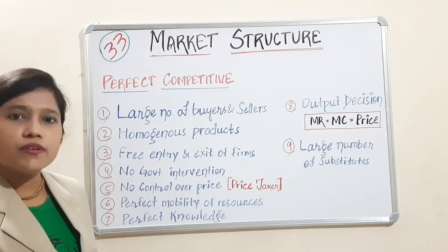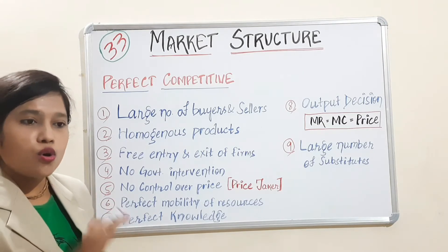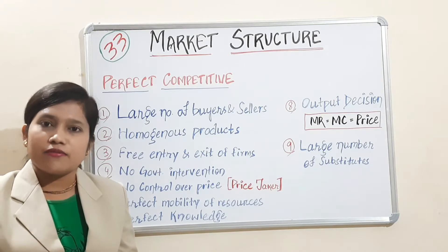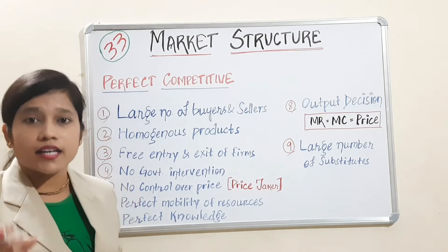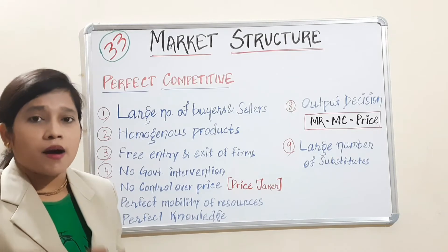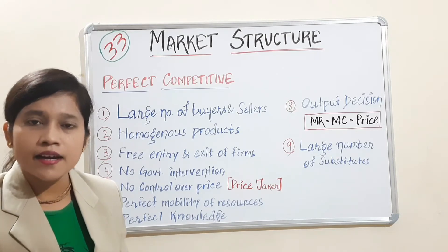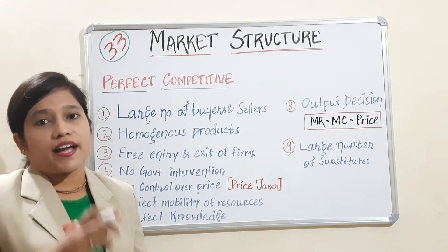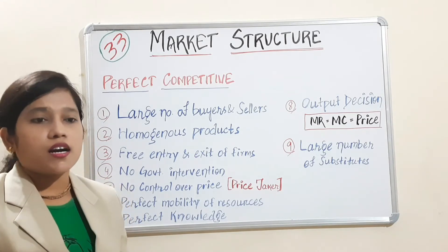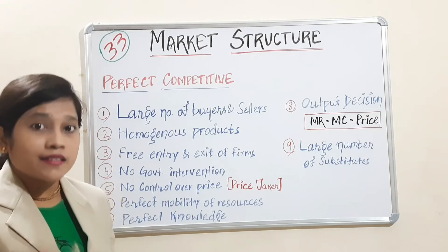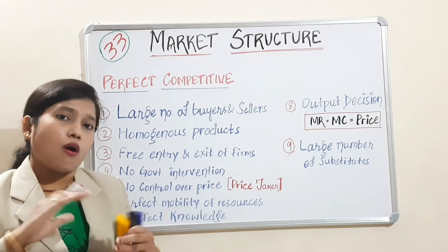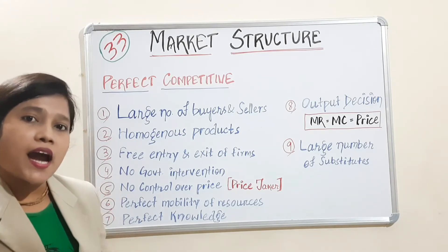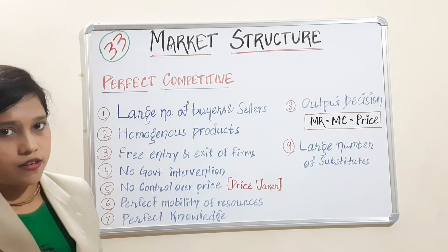Next is no government intervention. Whatever happens in the market, the government has no role. All the price, quantity, arrival — all activities will be decided by the market committee, depending upon market demand and market supply — what price needs to be fixed, what quantity arrival should be done, what seasonal arrival should be done.